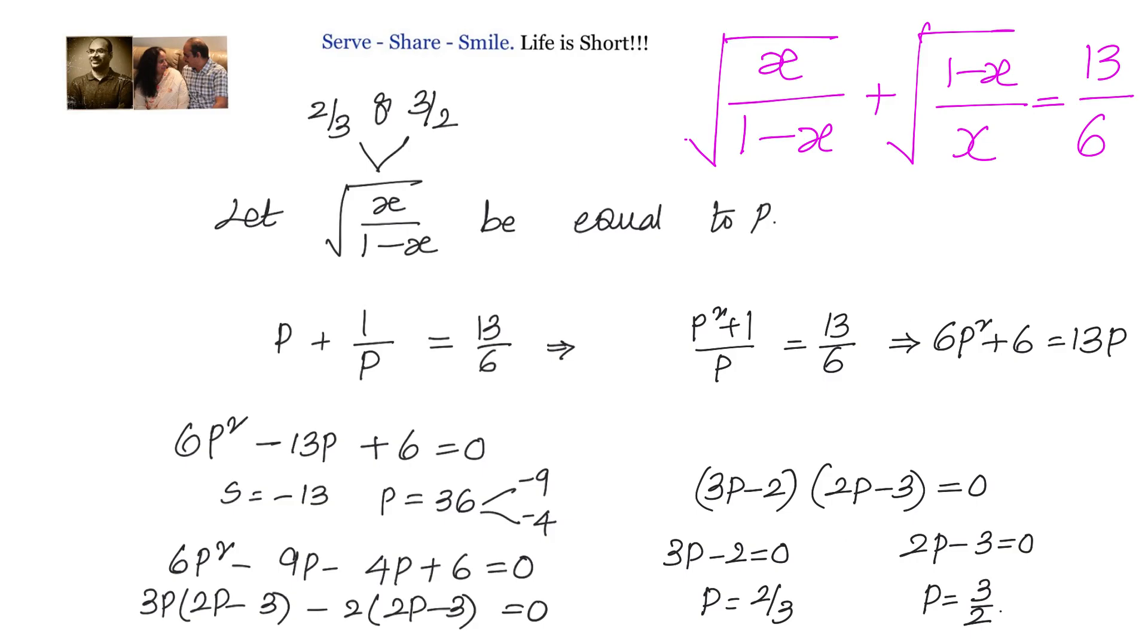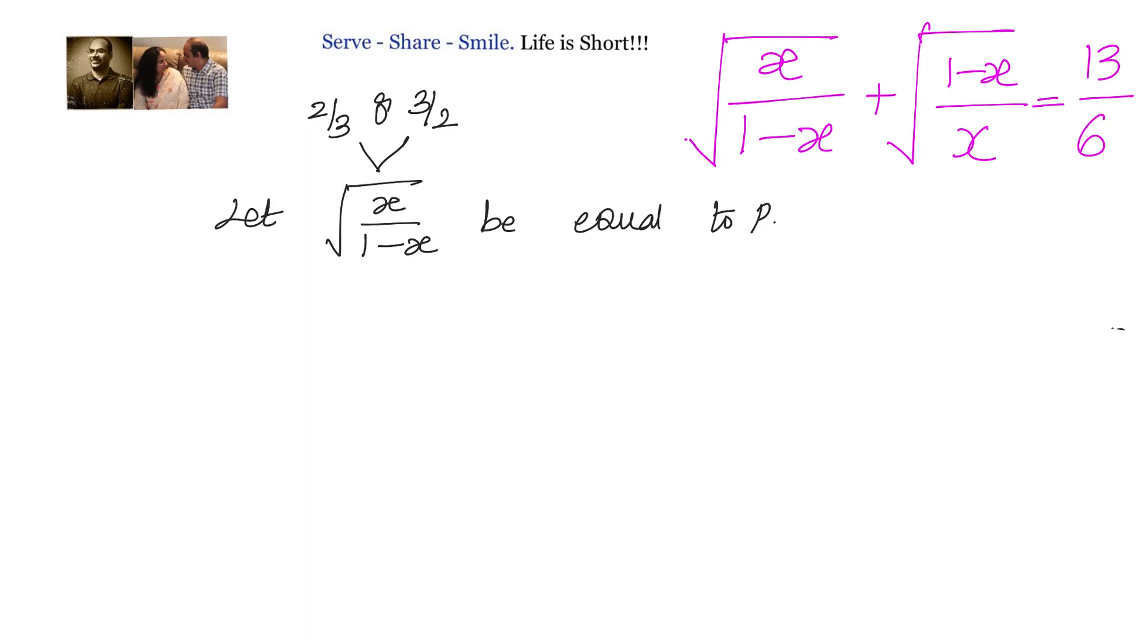Now let us go ahead and substitute that and find out the value of x. We have two scenarios: one is square root of x by 1 minus x is 2 by 3, another one is square root of x by 1 minus x equals to 3 by 2. Now let us try to solve them separately.